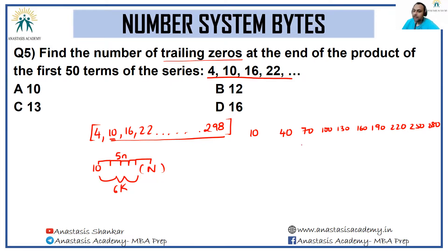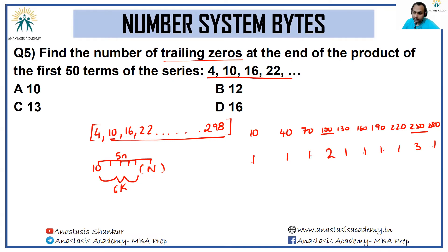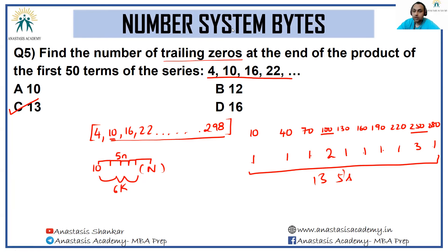Counting fives: 10 gives one 5; 40 gives one; 70 gives one; 100 = 4 × 25 gives two fives; 130 gives one; 160 gives one; 190 gives one; 220 gives one; 250 = 2 × 125 gives three fives; 280 gives one. Total: 1+1+1+2+1+1+1+1+3+1 = 13 fives. Therefore the answer is 13, option C.